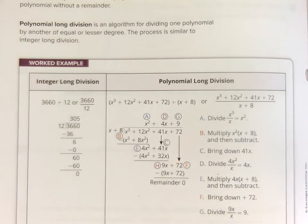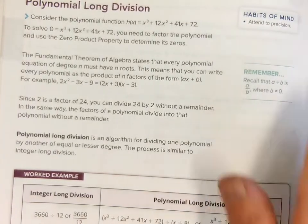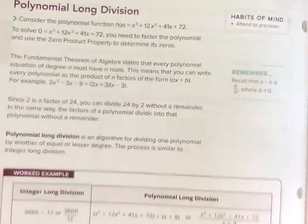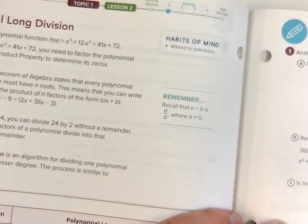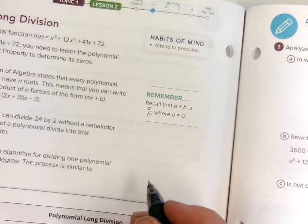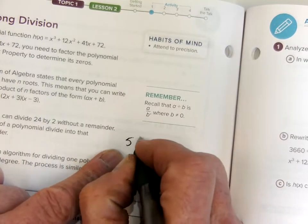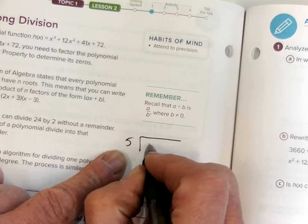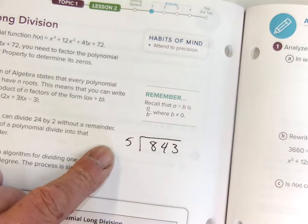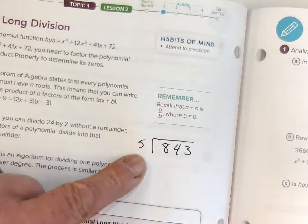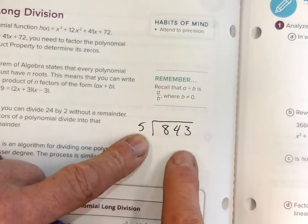Okay everybody, today we did long division and it's kind of hard. So before I start with the book's example, let's go back to something old. For example, if I had five divided into 843 — first of all, does five go into 843 evenly? No, we know it doesn't because it's not a five or zero, so five is not a factor.